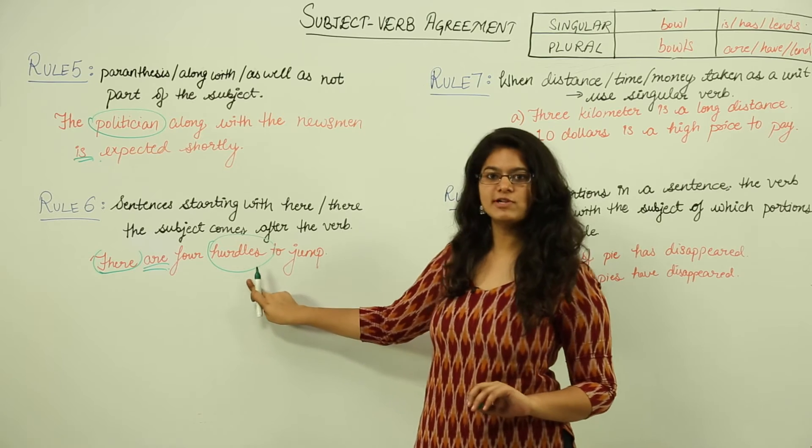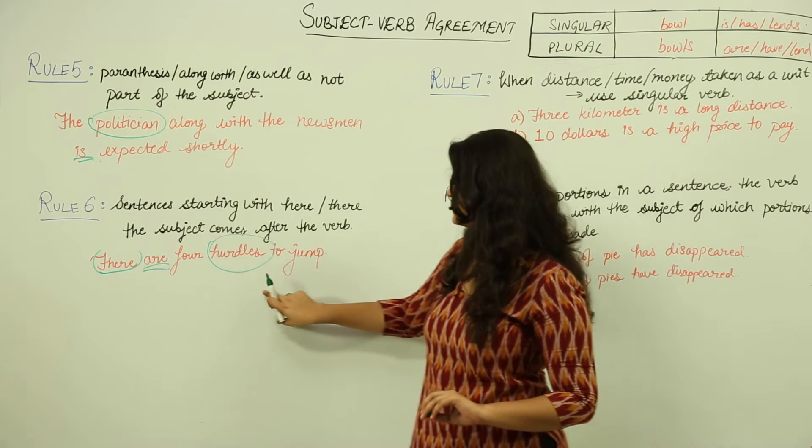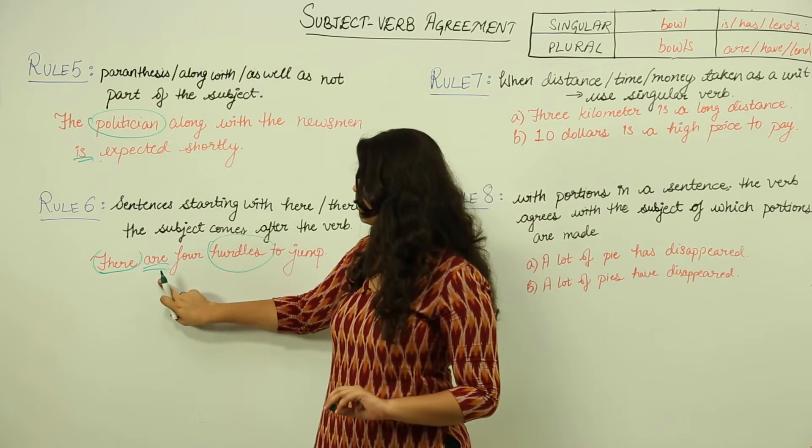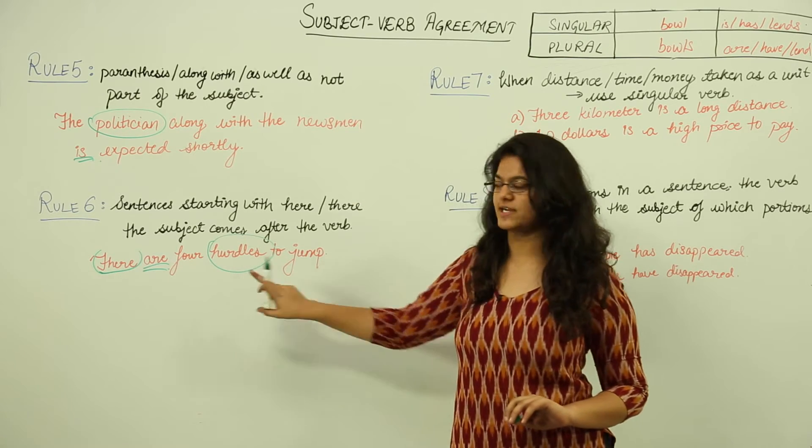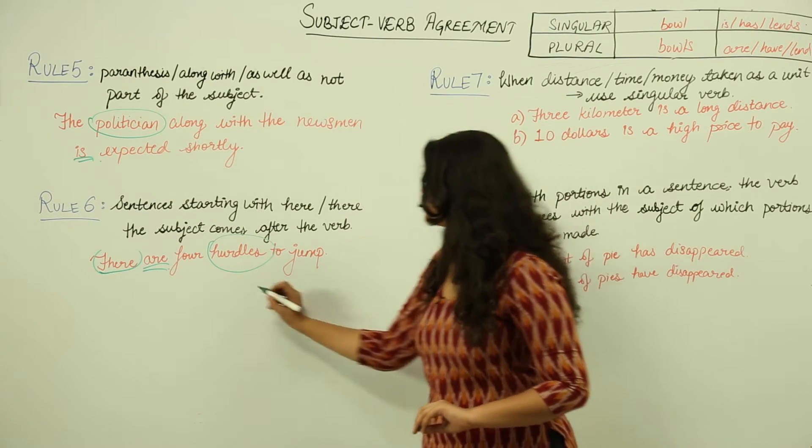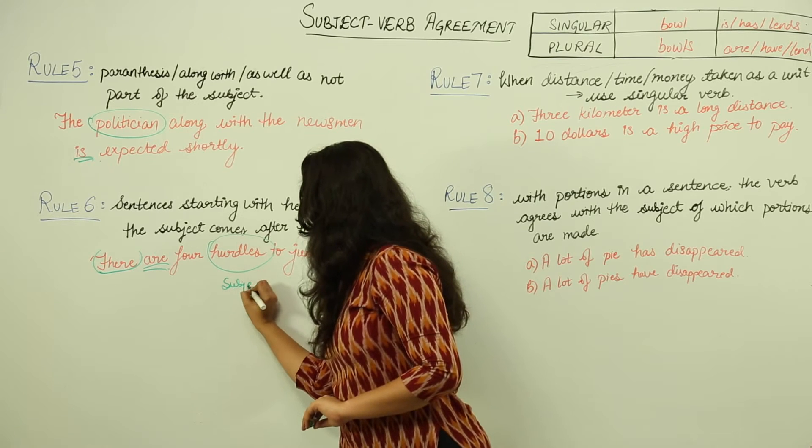Hurdles is a plural subject and it is coming after the verb as we can see here. And 'are' is a plural verb that is agreeing with the plural subject. So here we see the subject comes after the verb.